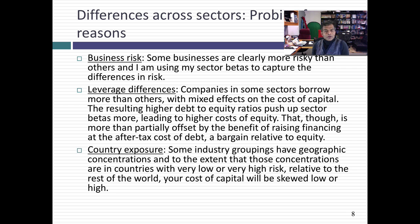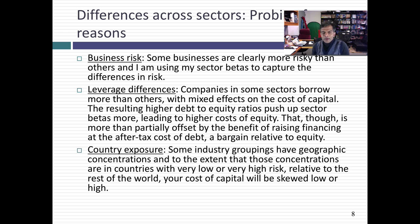Why are there differences across sectors? The first is business risk — some businesses produce more discretionary products and services and should have higher betas. The second is leverage differences. In some sectors, companies are able to borrow more money, which lowers their cost of capital — and they're able to borrow more because those sectors tend to be safer with more stable cash flows. The third is that some sectors are more exposed to certain countries than others. If you're a commodity company, you might be more exposed to the riskiest parts of the world, which pushes up your cost of capital. That's why oil and gas companies might have higher cost of capital — their resources happen to be in the riskiest parts of the world.